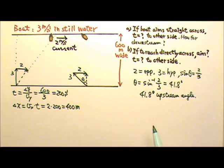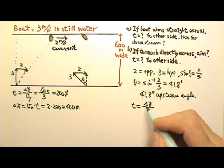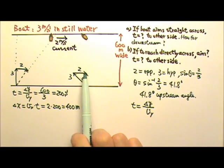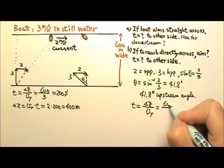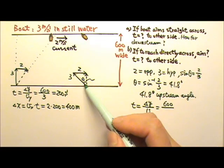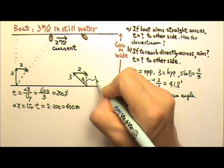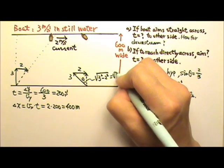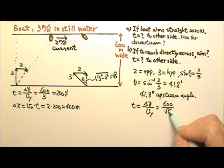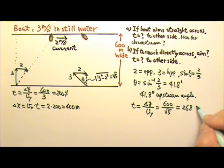Now let's find the time to the other side. We still know delta y, so time equals delta y divided by the velocity's y component. This total velocity is entirely in the y direction, so there's no x component. Delta y is 600 meters, and the y component is found using the Pythagorean theorem: square root of 3 squared minus 2 squared equals square root of 5. So time equals 600 divided by the square root of 5, which gives approximately 268 seconds.